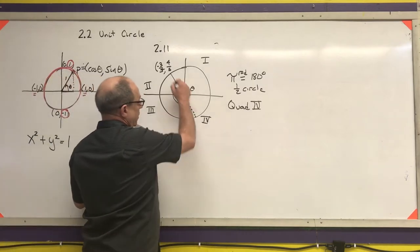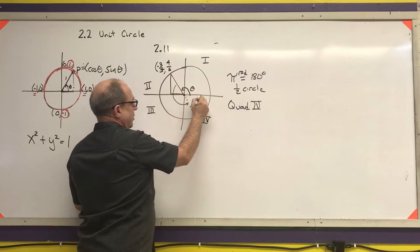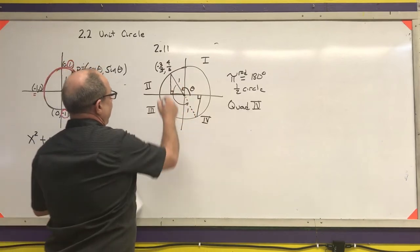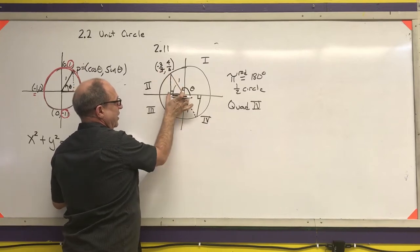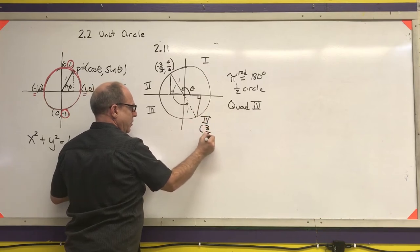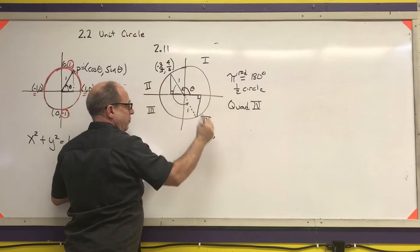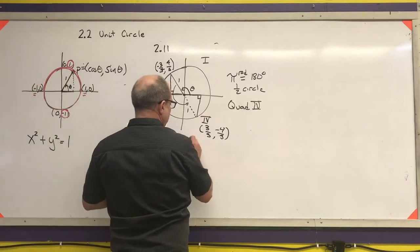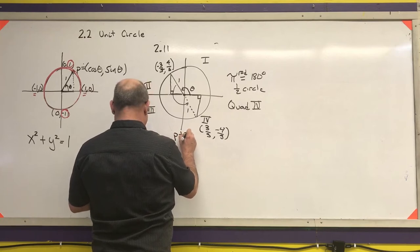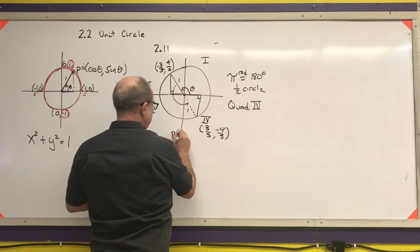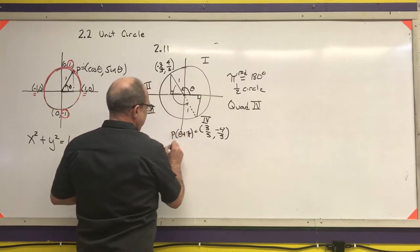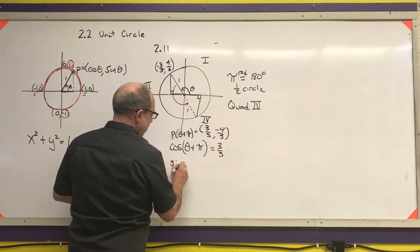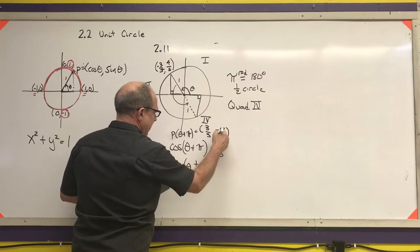The two triangles — the one for theta and the one for theta plus π — are congruent. I know the hypotenuse length is 1. If the x-coordinate for theta is -3/5, then for theta plus π I go 3/5 in the other direction. If the y-distance up is 4/5, then I go down 4/5. So the coordinates of P(theta + π) are (3/5, -4/5). Therefore, cosine of (theta + π) is 3/5 and sine of (theta + π) is -4/5.